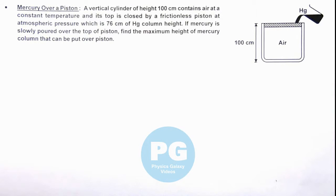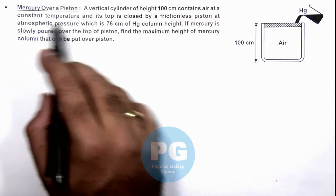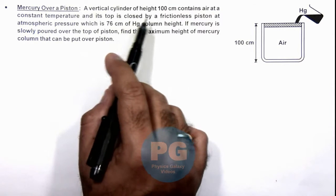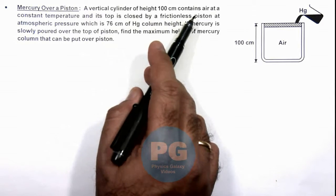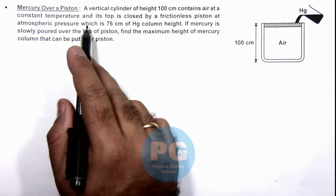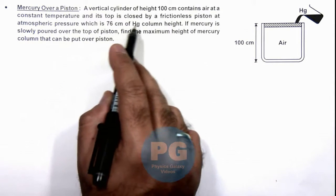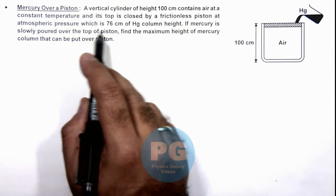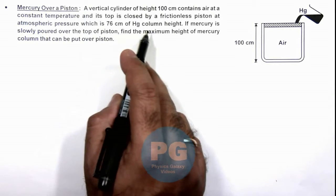In this illustration we'll discuss mercury over a piston. We are given that a vertical cylinder of height 100 centimeters contains air at a constant temperature, and its top is closed by a frictionless piston at atmospheric pressure, which is 76 centimeters of mercury column height.